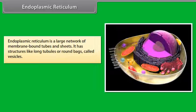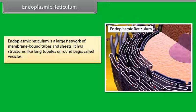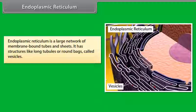Endoplasmic Reticulum is a large network of membrane-bound tubes and sheets. It has structures like long tubules or round sacs called vesicles. On the basis of presence of ribosomes, they are of two types.